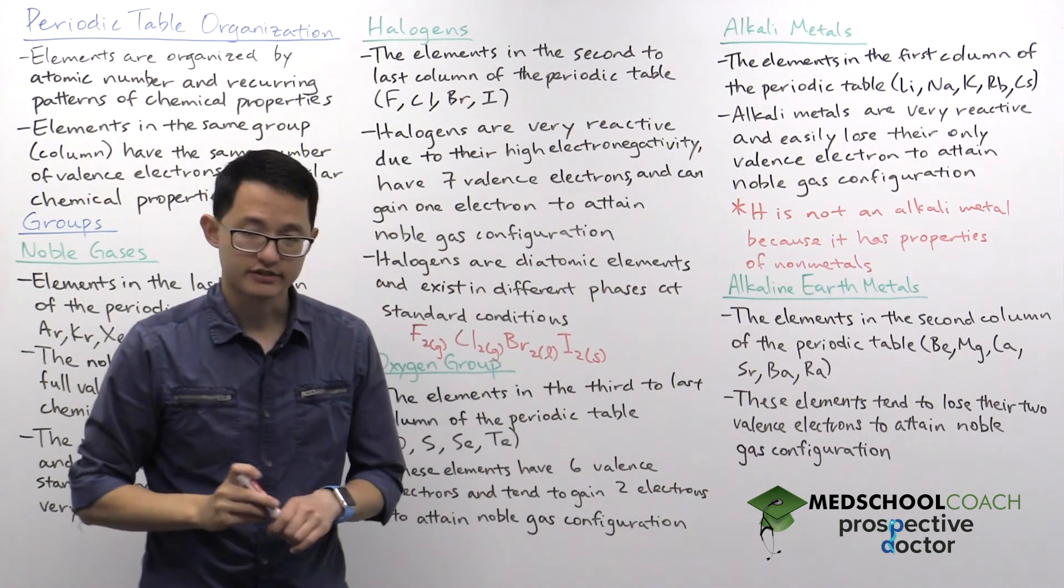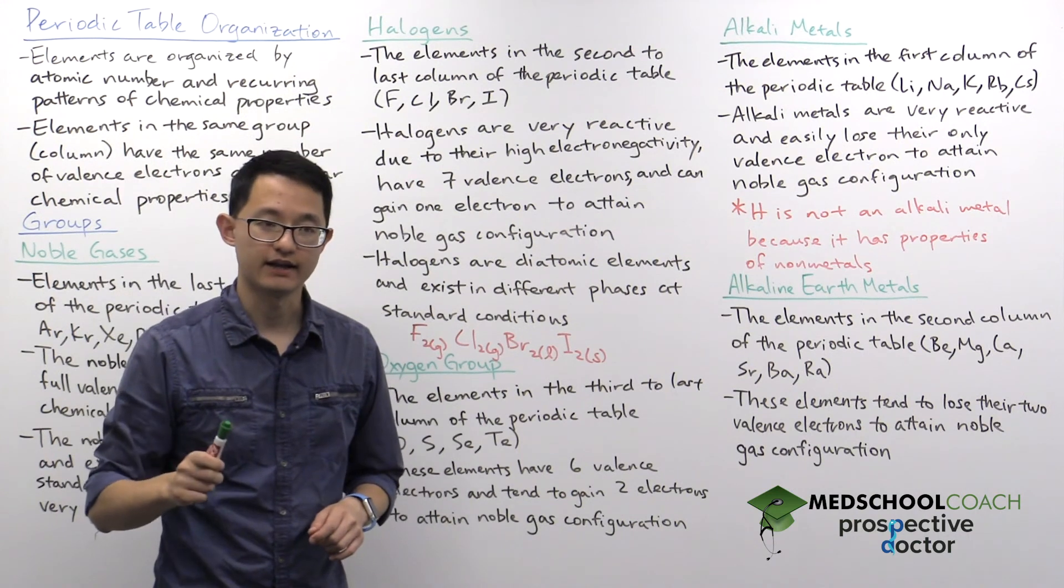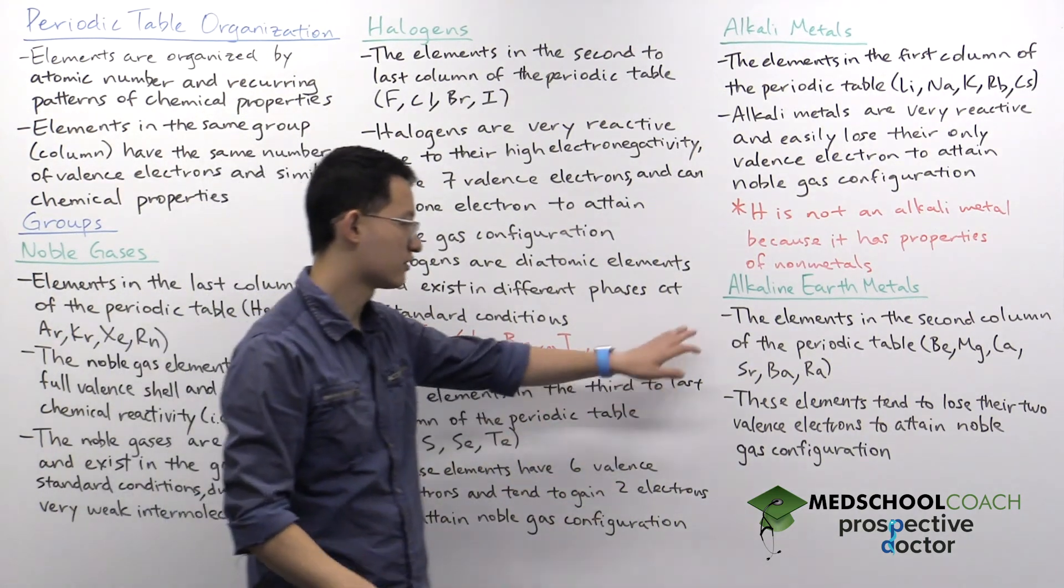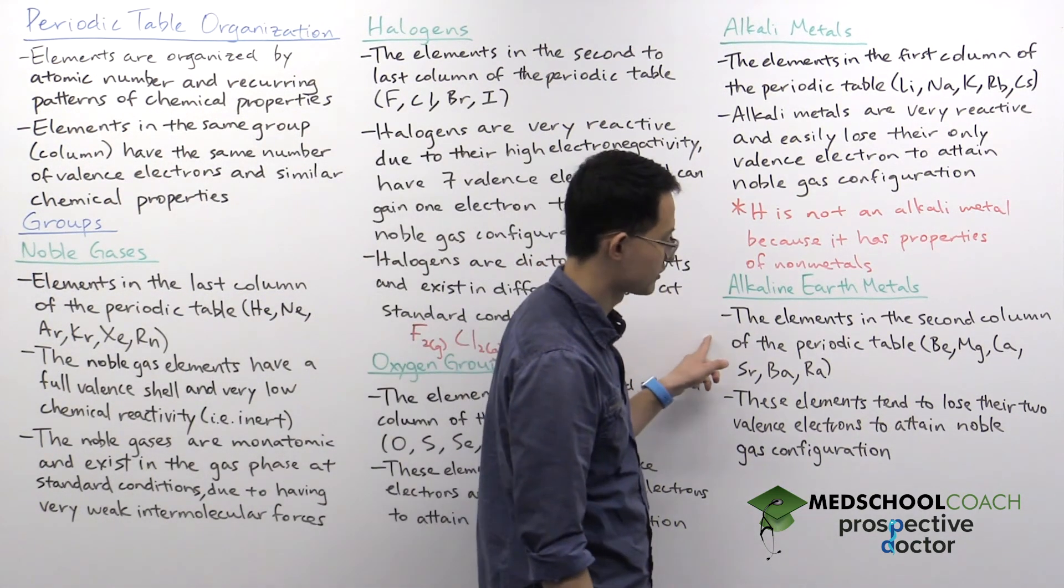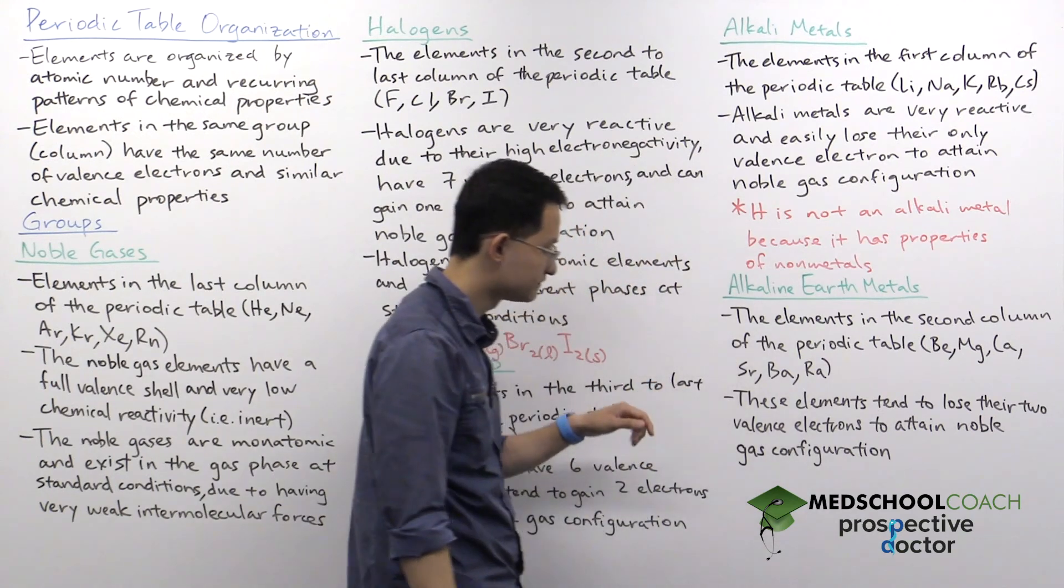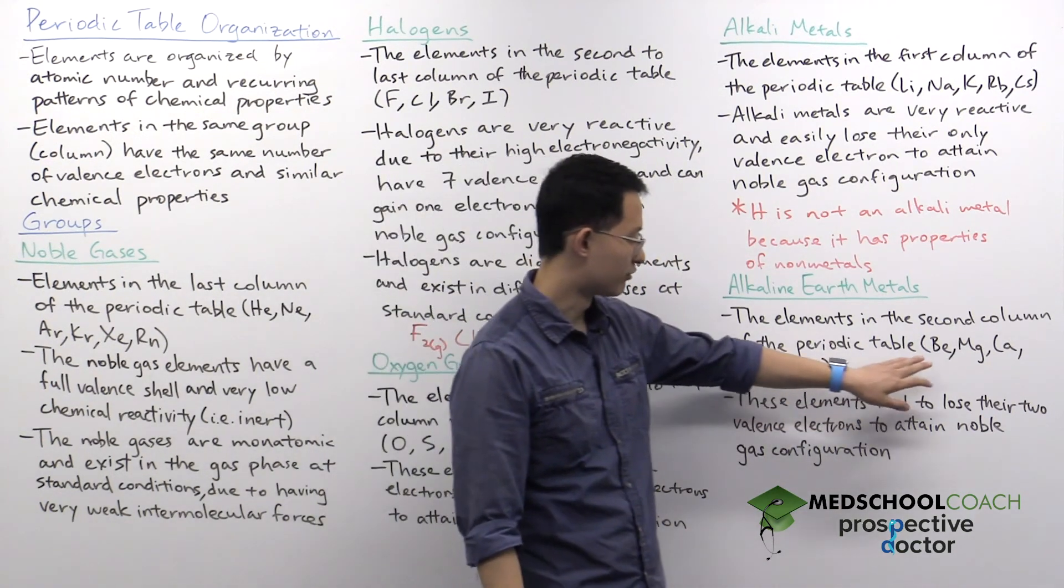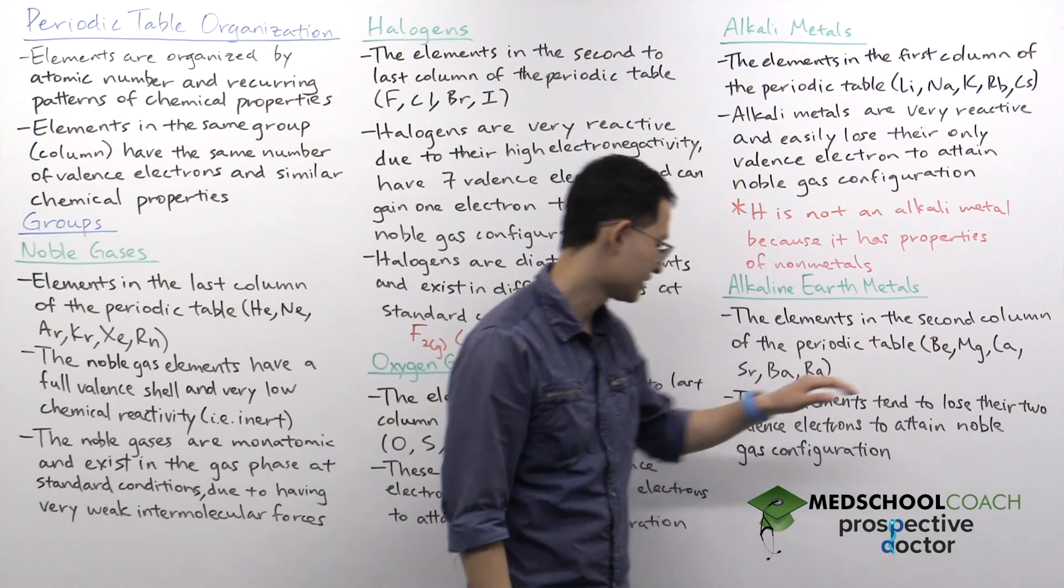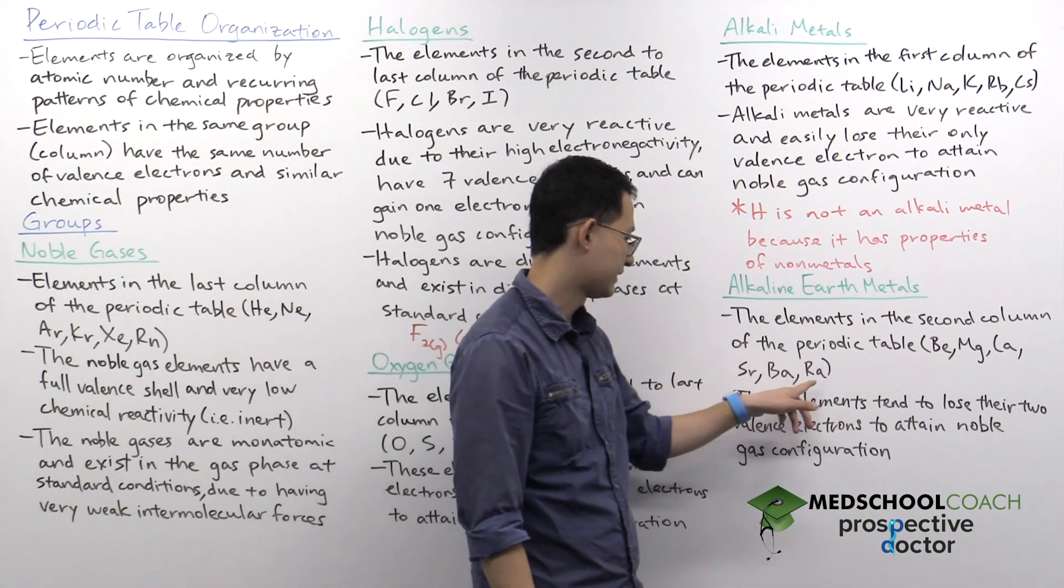Okay, so now let's look at the last group you're responsible for the MCAT. That's the alkaline earth metals. These elements are the second column of the periodic table and include beryllium, magnesium, calcium, strontium, barium, and radium.